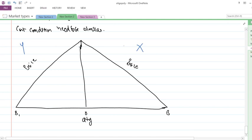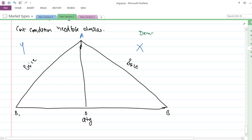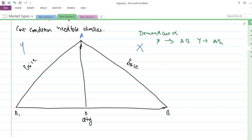On the left side we will be seeing firm Y and on the right side we will be seeing firm X. The demand curve for X is AB and for Y is AB1. This is the demand curve of X and Y respectively.